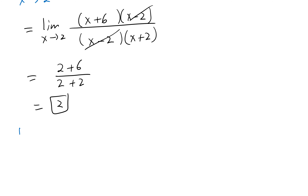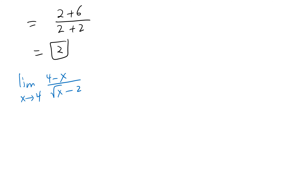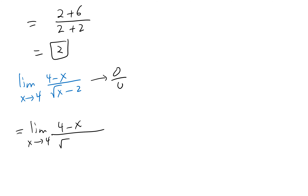Next example: find the limit of (4 − x)/(√x − 2) as x approaches 4. Again this goes to 0 over 0. Another trick is to rationalize the denominator — we multiply by the conjugate, which is the same denominator with the middle sign switched: (√x + 2)/(√x + 2).